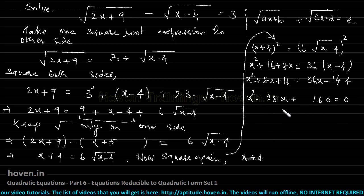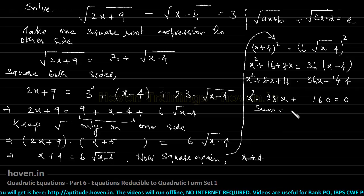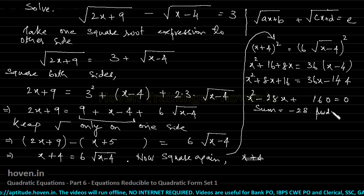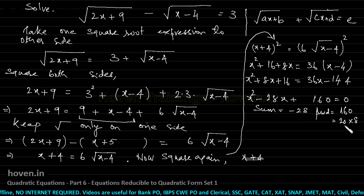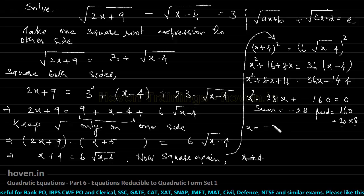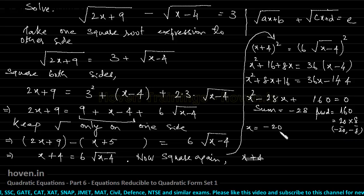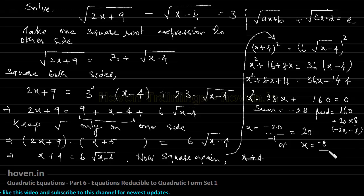I am solving it completely because I have to demonstrate one point here. I need two numbers whose sum is −28 and product is 160, that is 20 × 8. So the numbers are −20 and −8. The solutions will be x = 20 or x = 8.